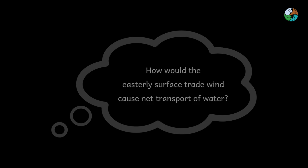Here is a question. In very large scale, how would the easterly surface tradewind cause net transport of water?